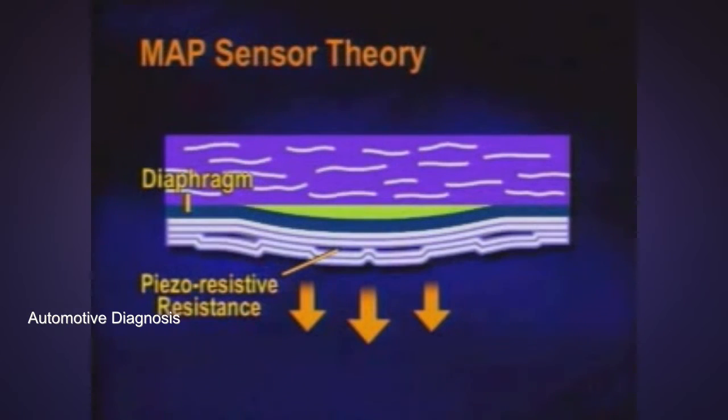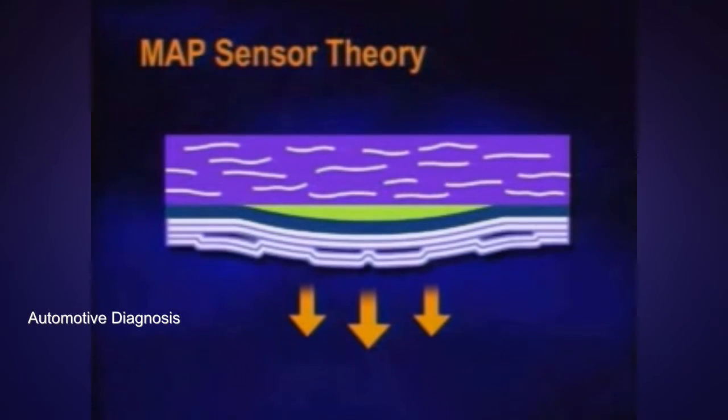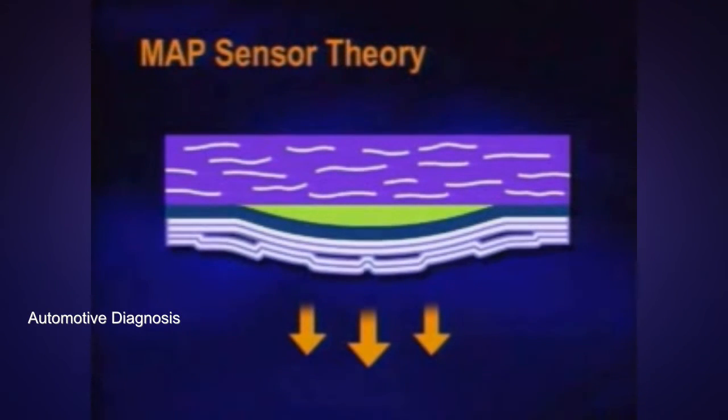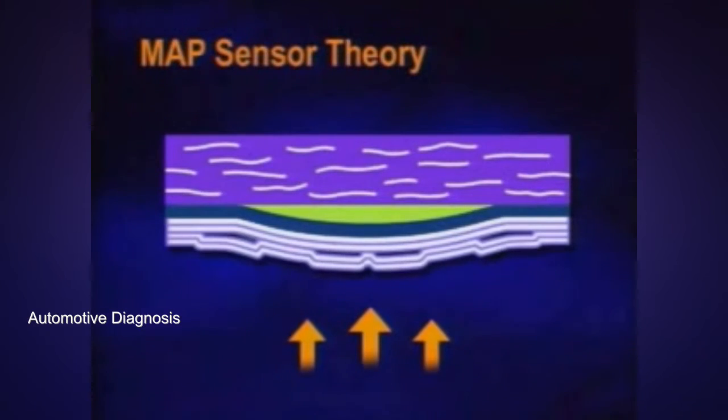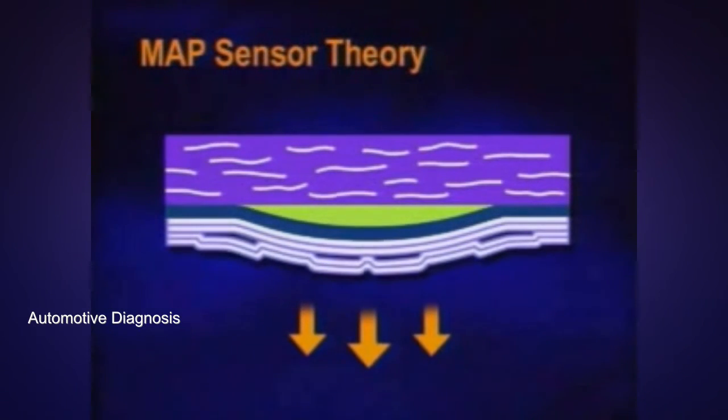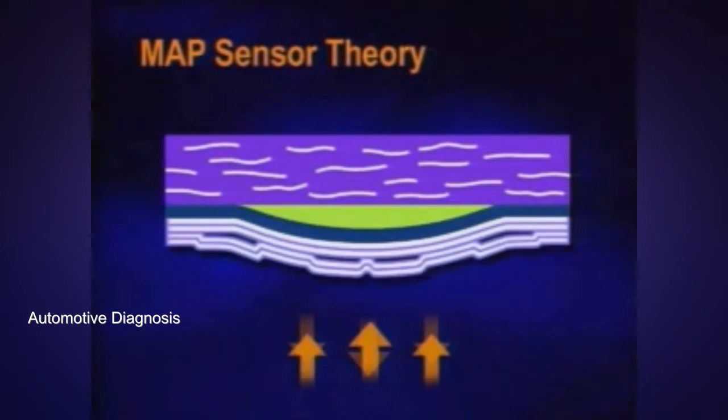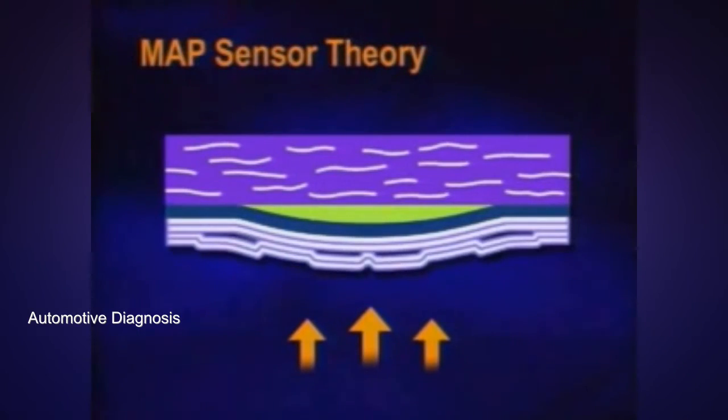The sensor consists of a diaphragm and piezo-resistive resistance. The piezo-resistive resistance are located on the diaphragm. The diaphragm is deflected depending on the air intake pressure. Accordingly, resistance is changed and output voltage also changed.